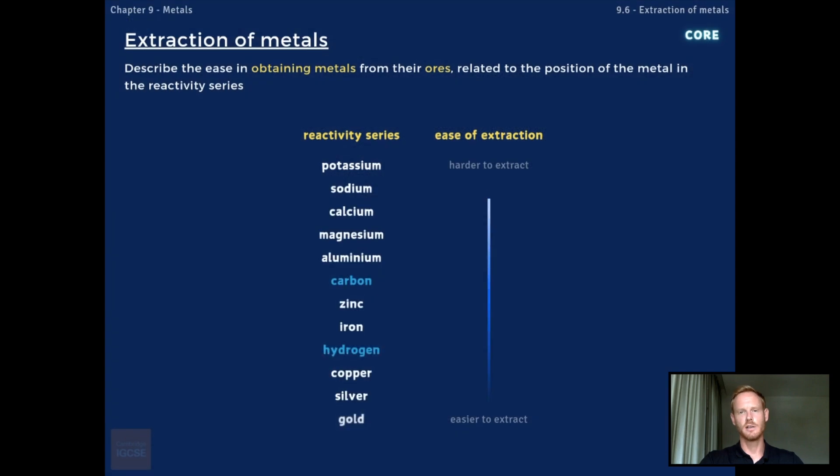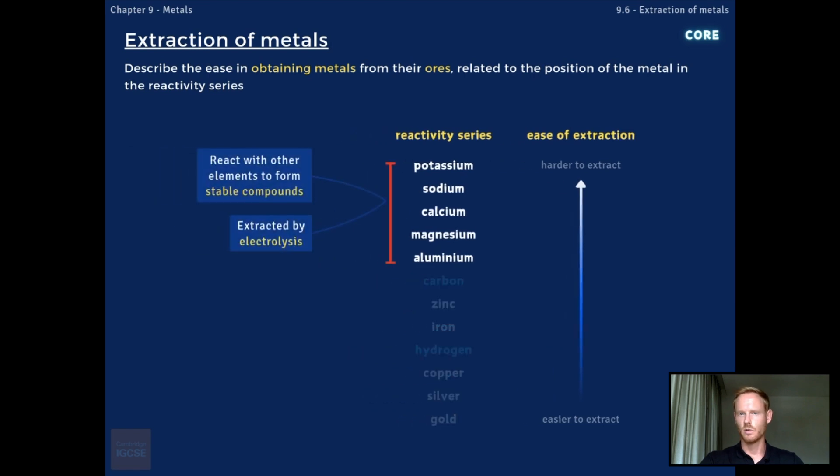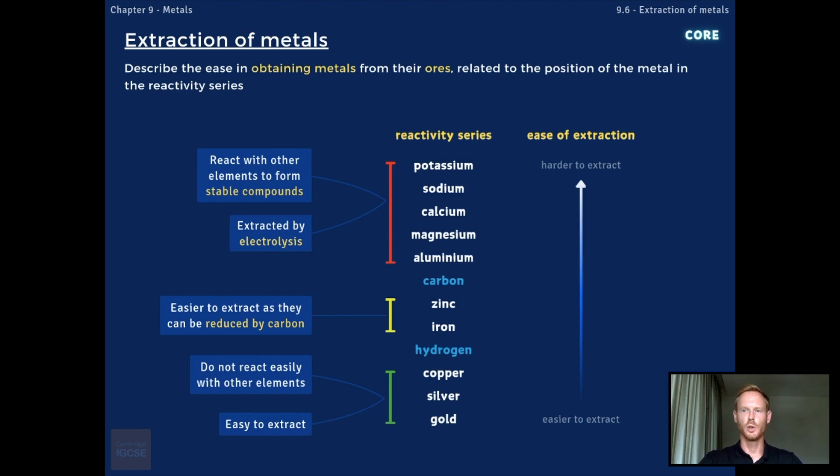Metals can be extracted from their ores more easily moving down the reactivity series. Highly reactive metals like sodium, potassium, and aluminium react readily with oxygen and other elements, so extracting them from their ores usually involves more complex methods like electrolysis. Less reactive metals like zinc and iron can be extracted by reduction with carbon, because they both sit below carbon in the series. Unreactive metals like silver and gold are often found in their native or pure form and require minimal processing to extract.